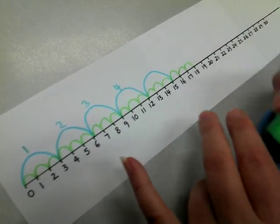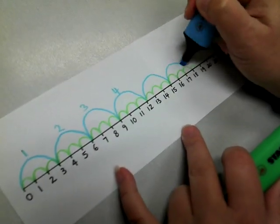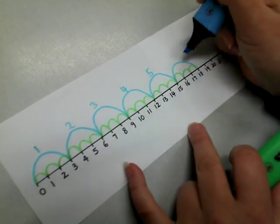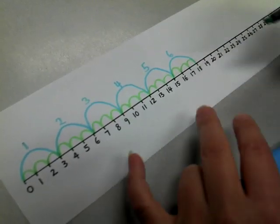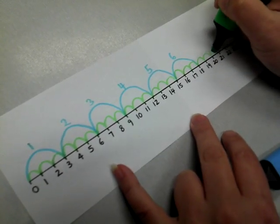One, two, three up to eighteen, so that was the fifth jump. One, two, three.